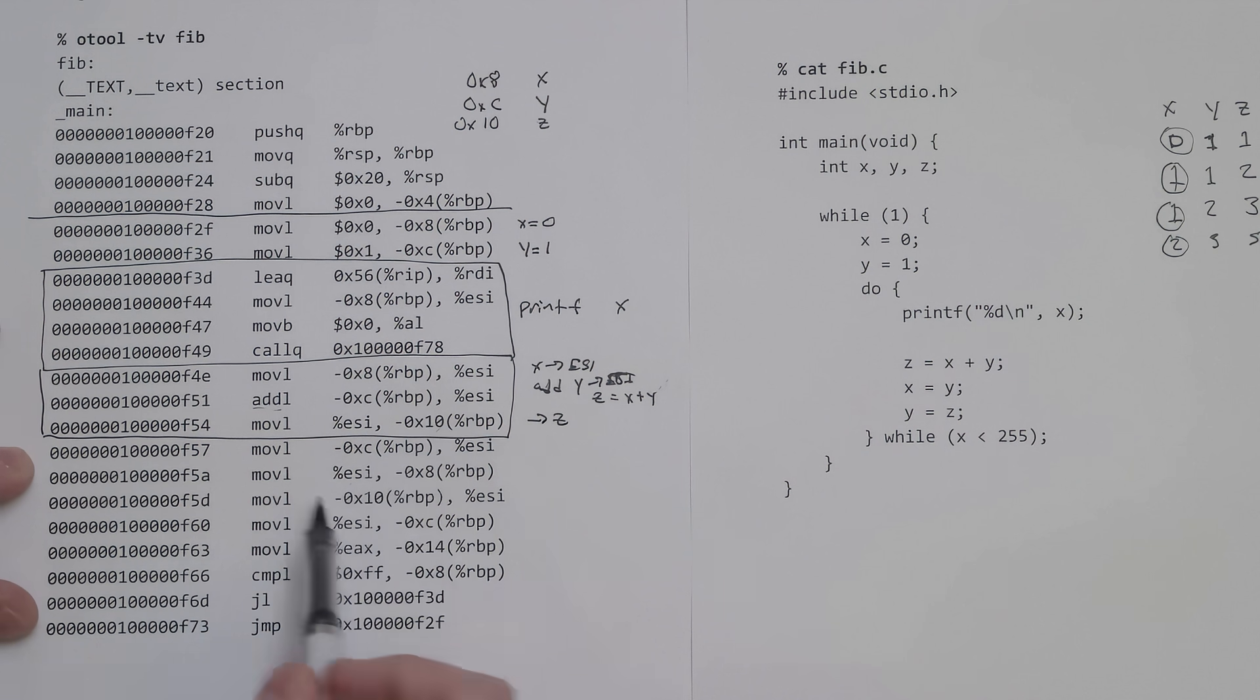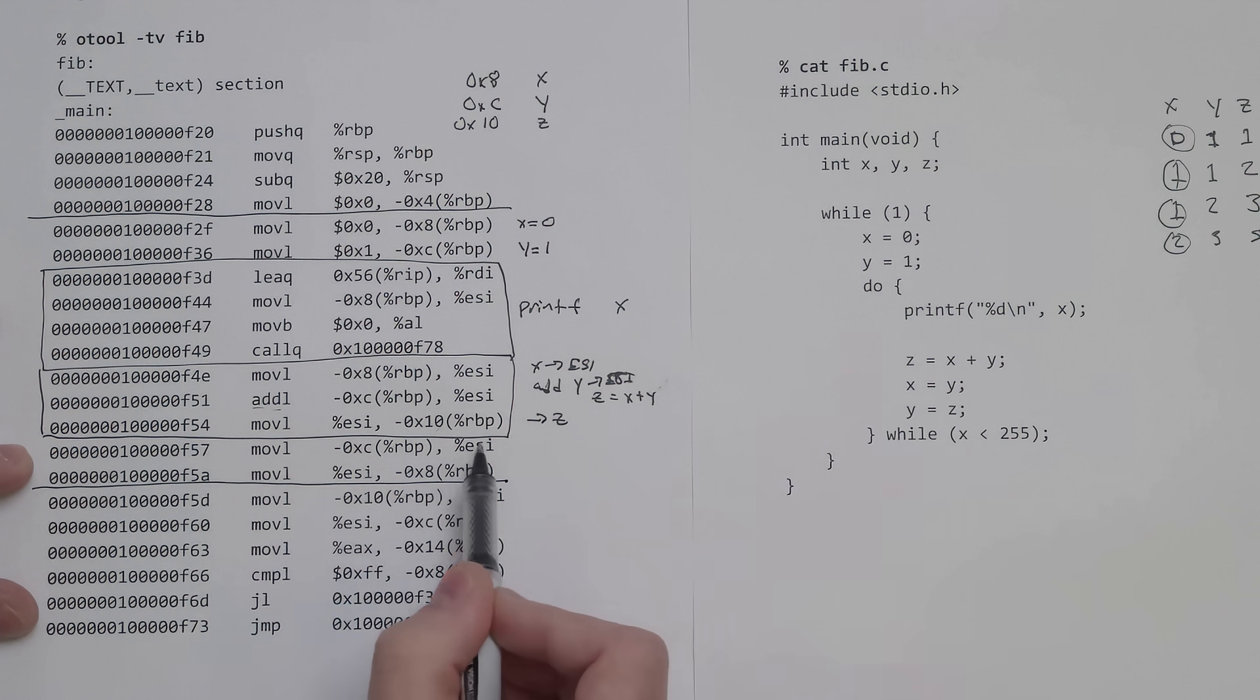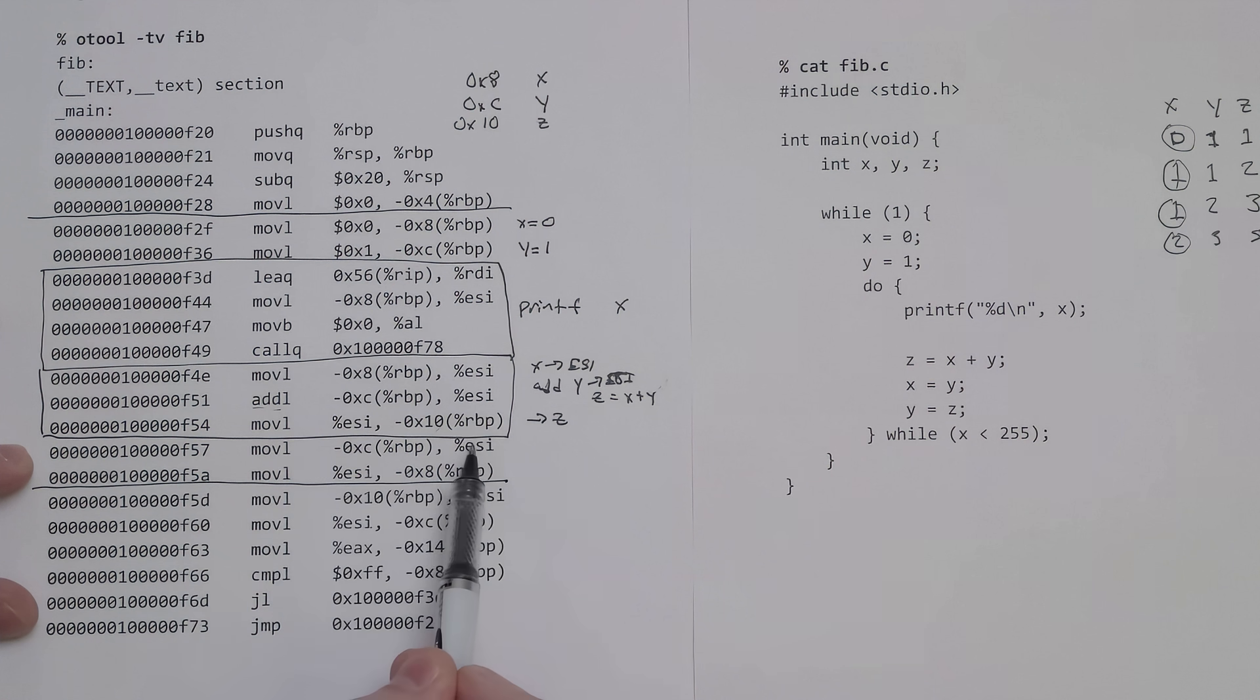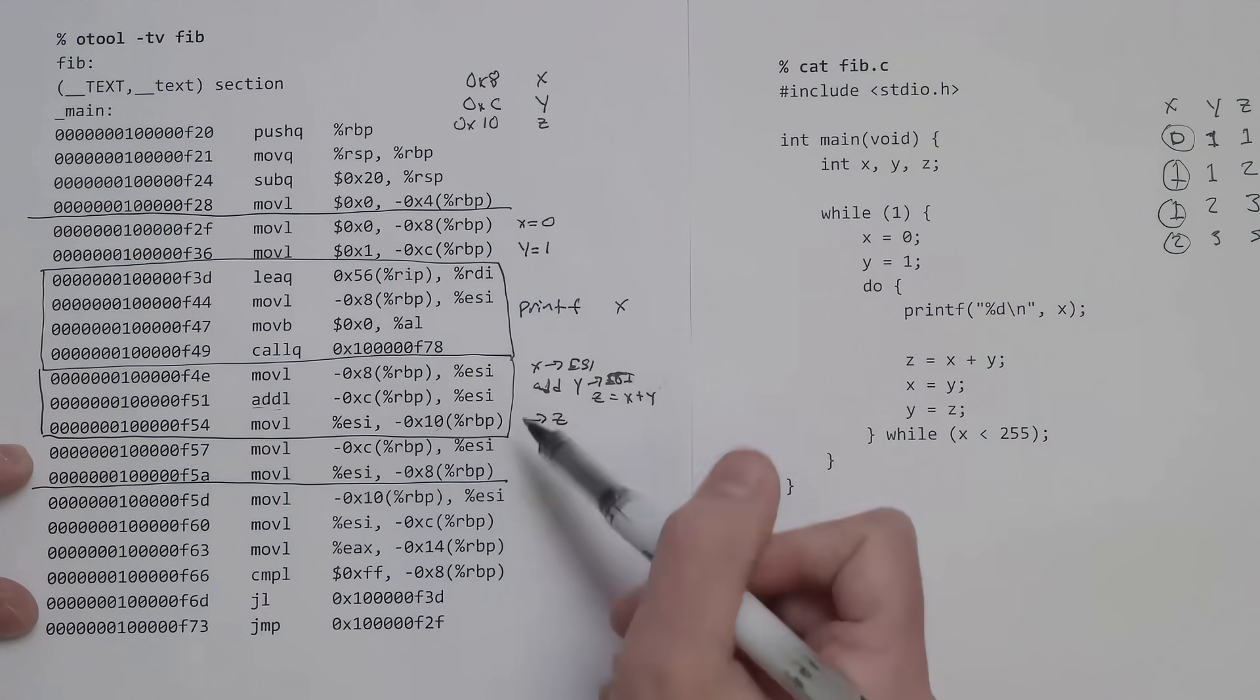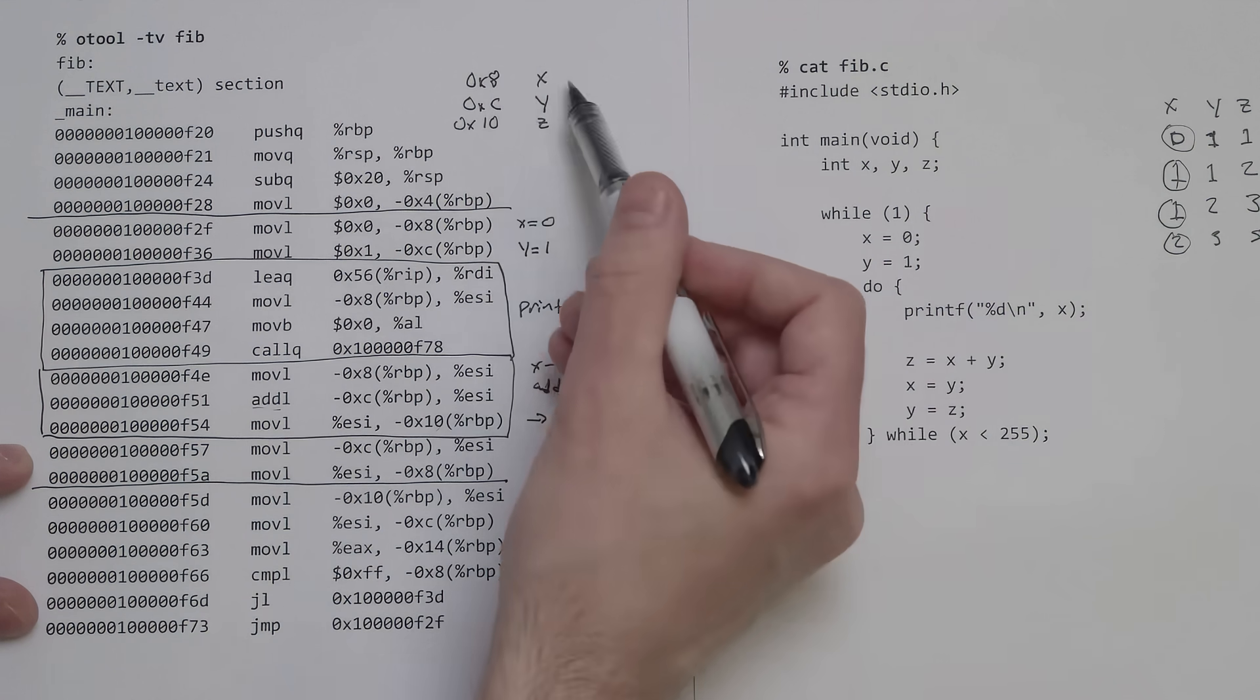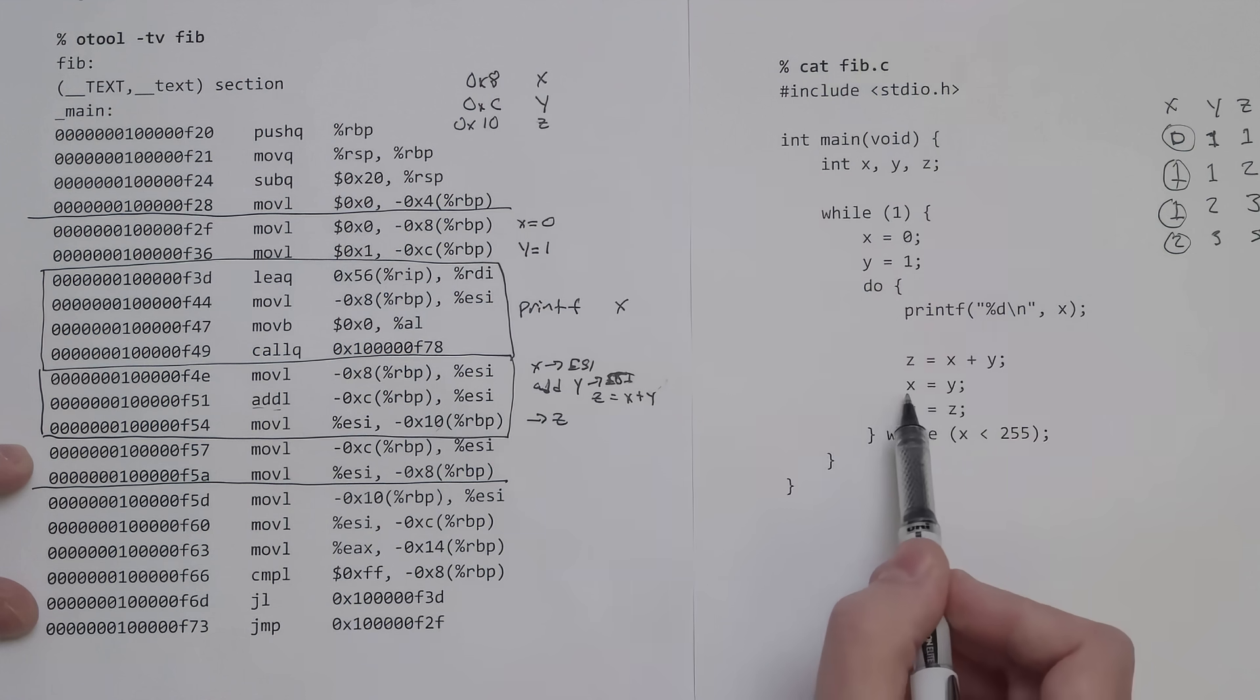The next two lines are doing x equals y. We're using this ESI register as a temporary location. We're taking 0xc, which is y, loading it into ESI, and then taking what's in ESI and putting it into 0x8. So we're taking y and putting it in x, setting x equal to y.